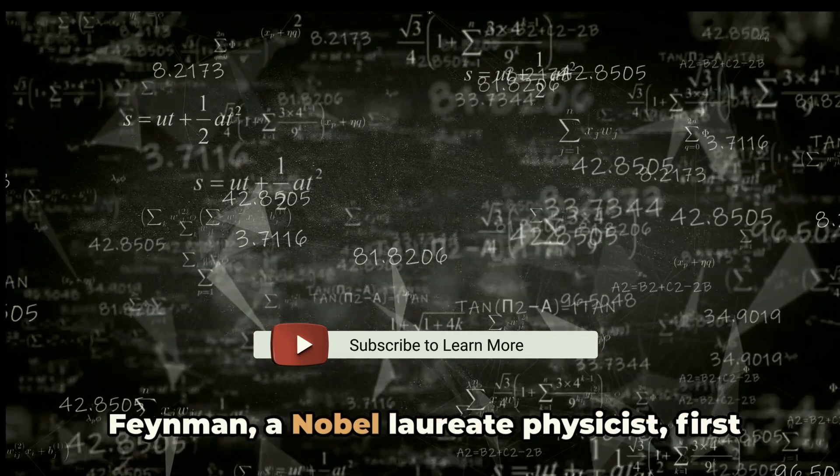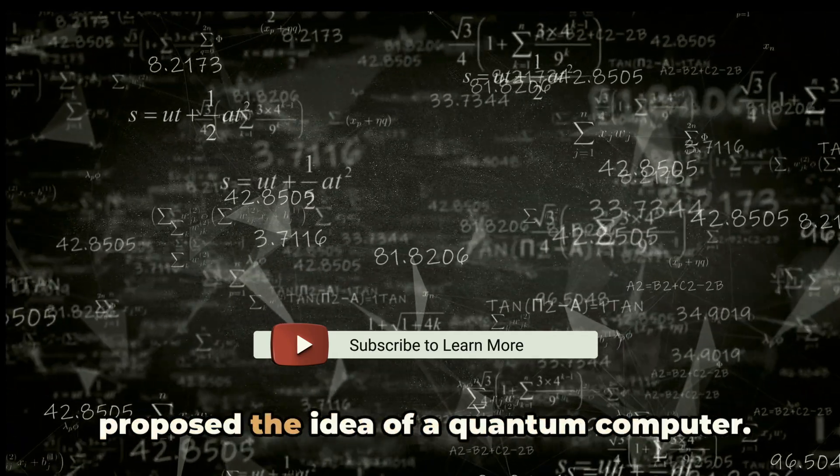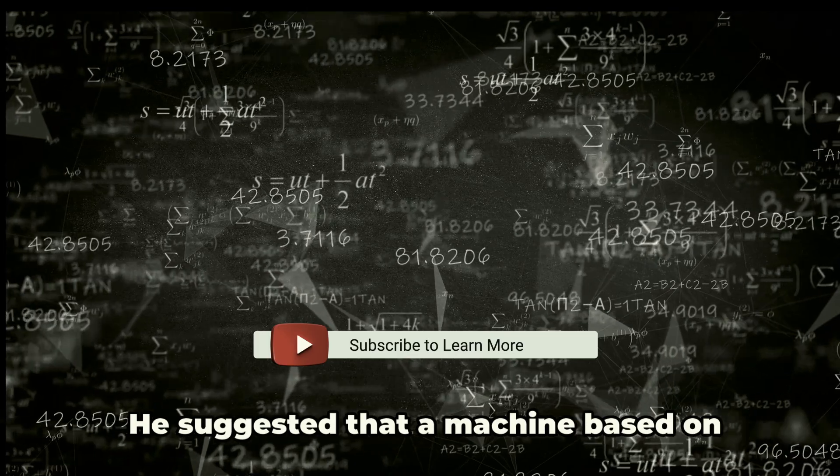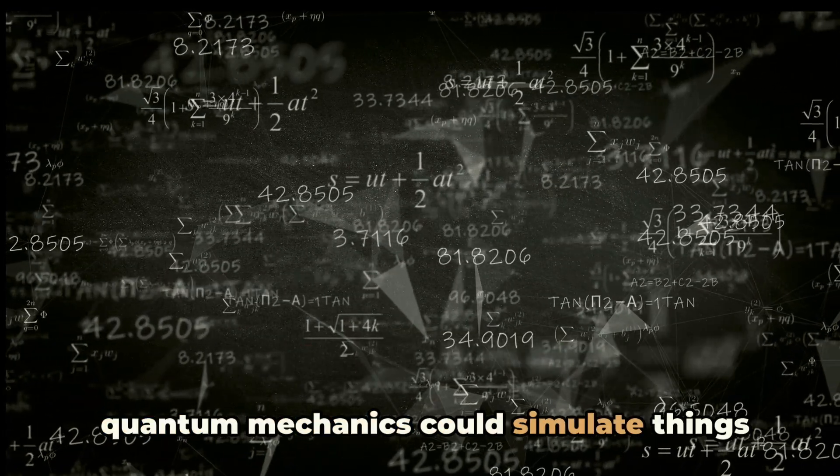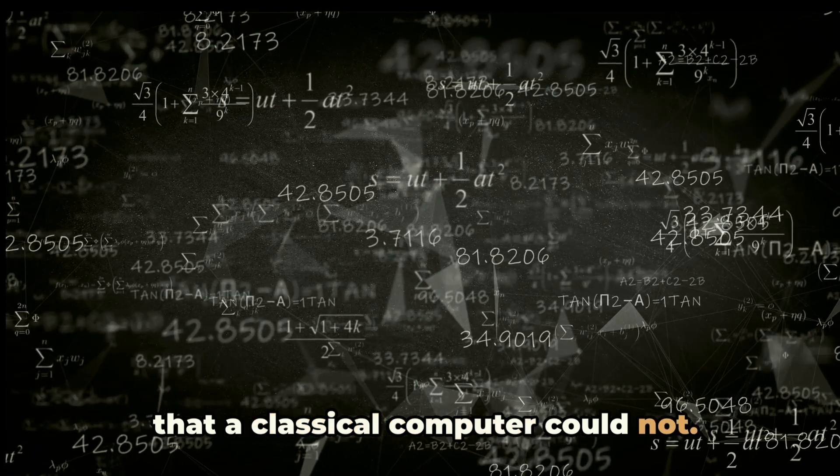Fast forward to 1981, when Richard Feynman, a Nobel laureate physicist, first proposed the idea of a quantum computer. He suggested that a machine based on quantum mechanics could simulate things that a classical computer could not.